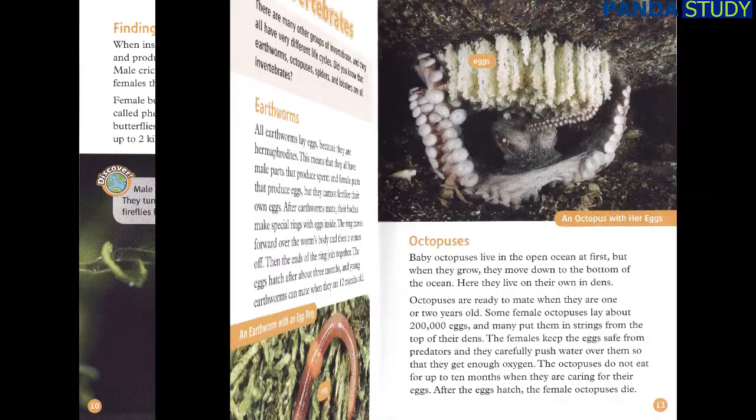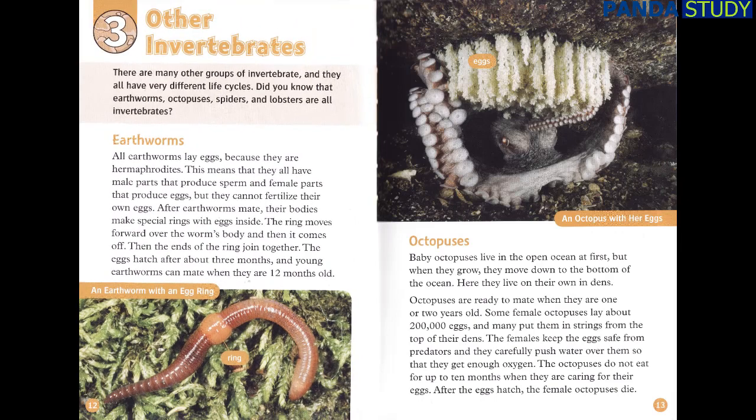Chapter 3: Other Invertebrates. There are many other groups of invertebrate and they all have very different life cycles. Did you know that earthworms, octopuses, spiders and lobsters are all invertebrates?